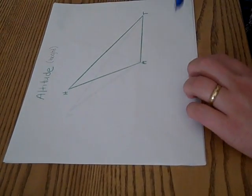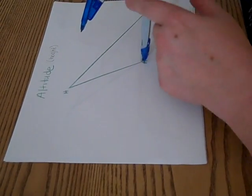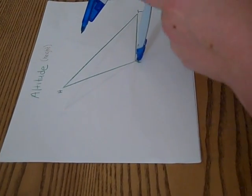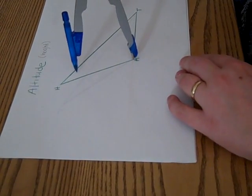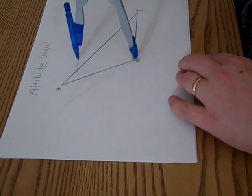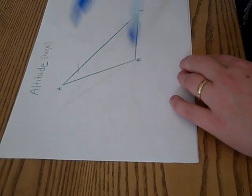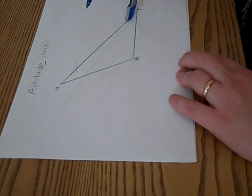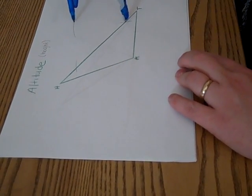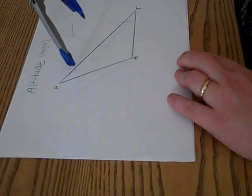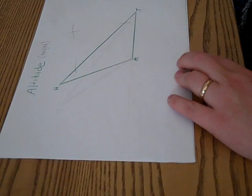What I need to do is take my compass point and place it on vertex A. I'm going to adjust my compass so I can swing an arc and hit segment H-T in two spots. Then those two points of intersection are used to create the locus of points to line up with point A.